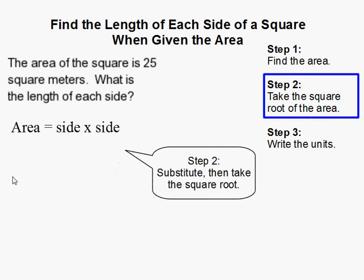So, in order to go backwards we need to then substitute our area here and then take the square root.